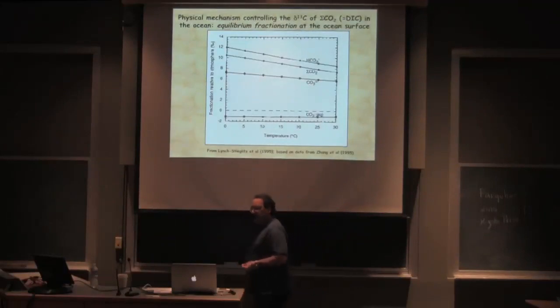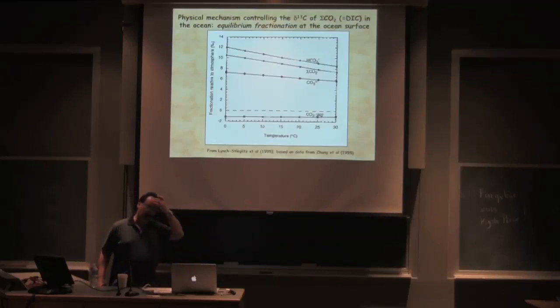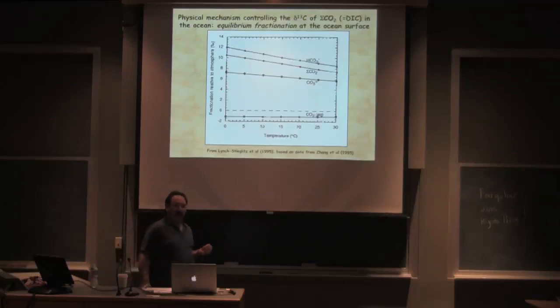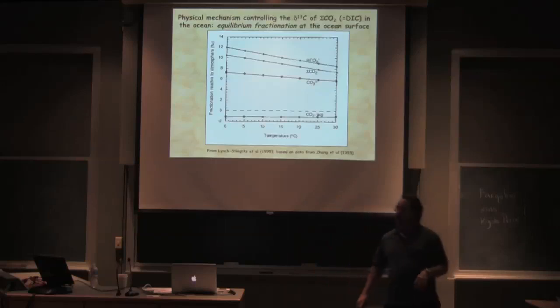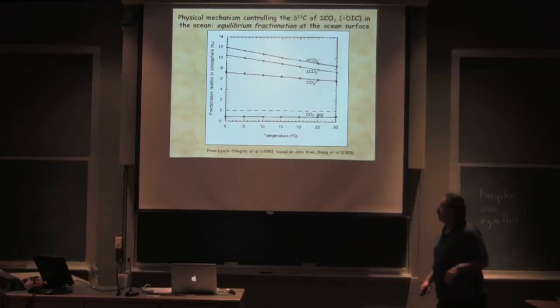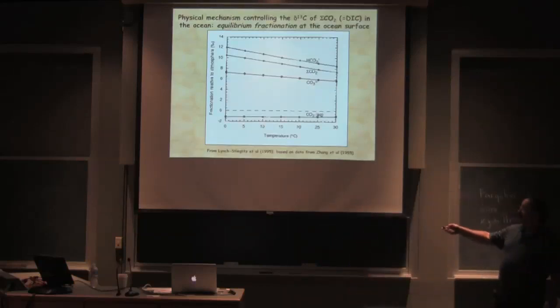When we look at this in carbon isotope space, we really have two big areas that can control the delta C-13 of this dissolved inorganic carbon in the ocean. The first is a temperature-dependent equilibrium between the atmosphere and the inorganic carbon in the ocean.